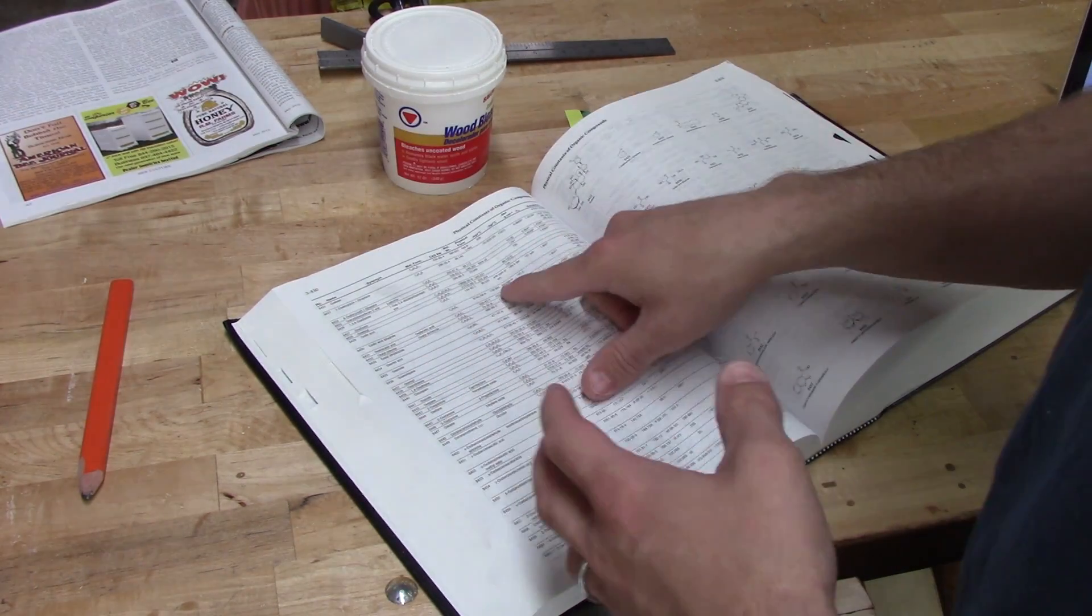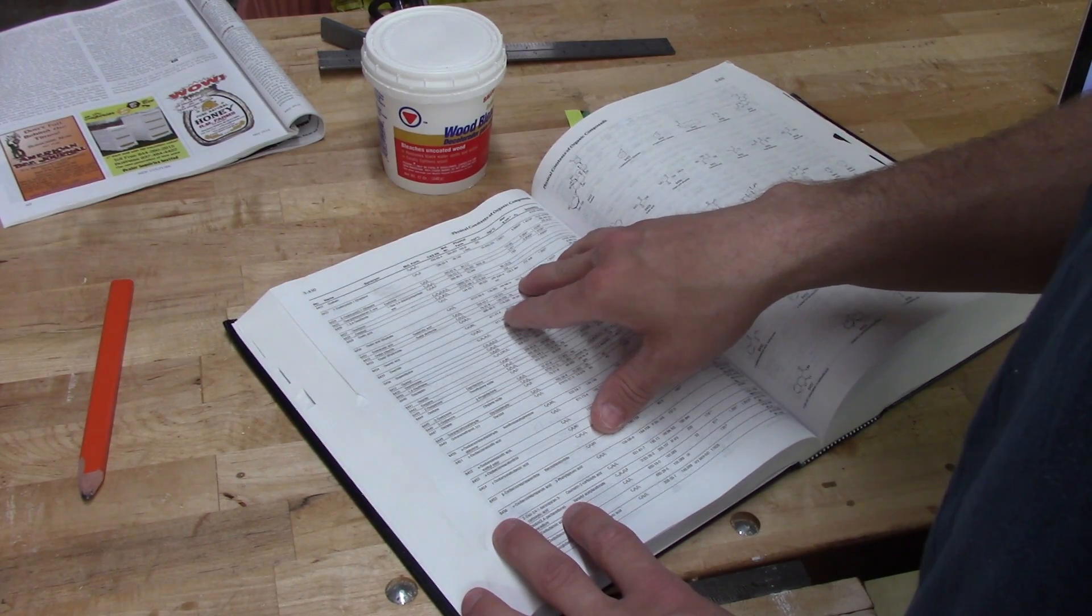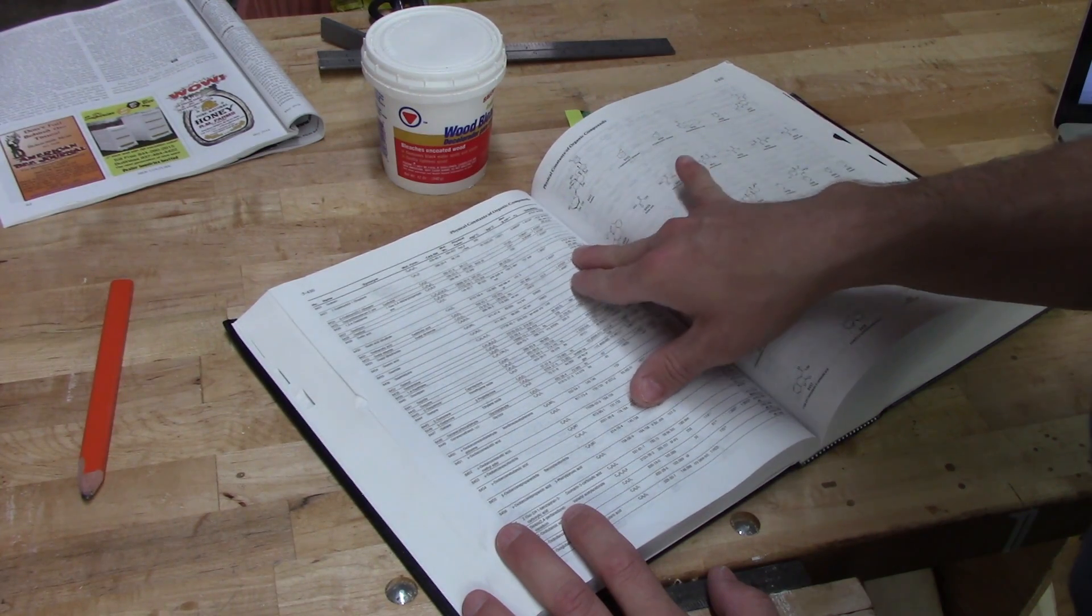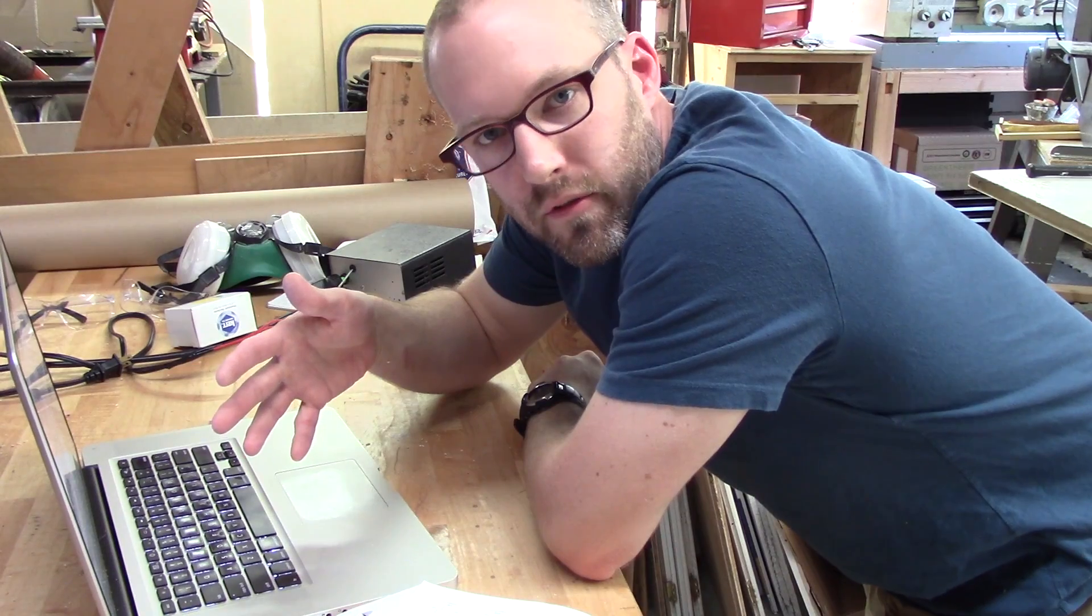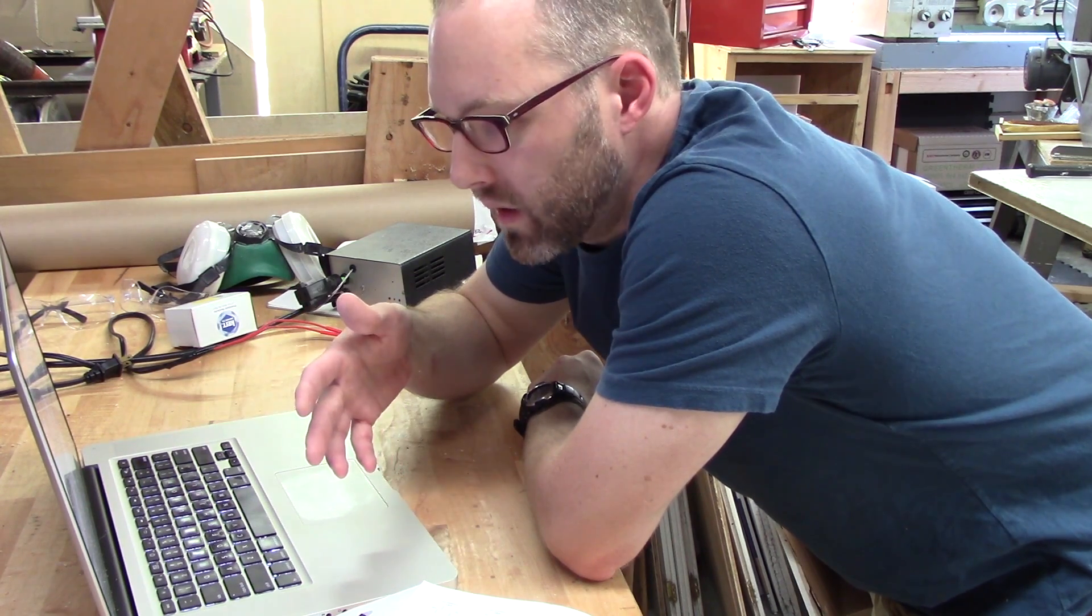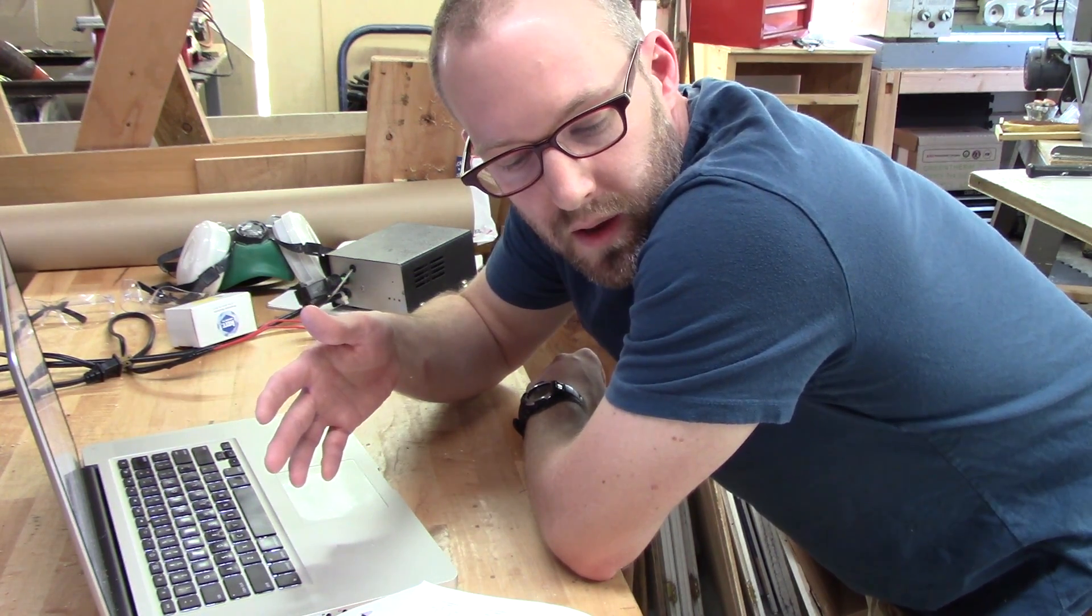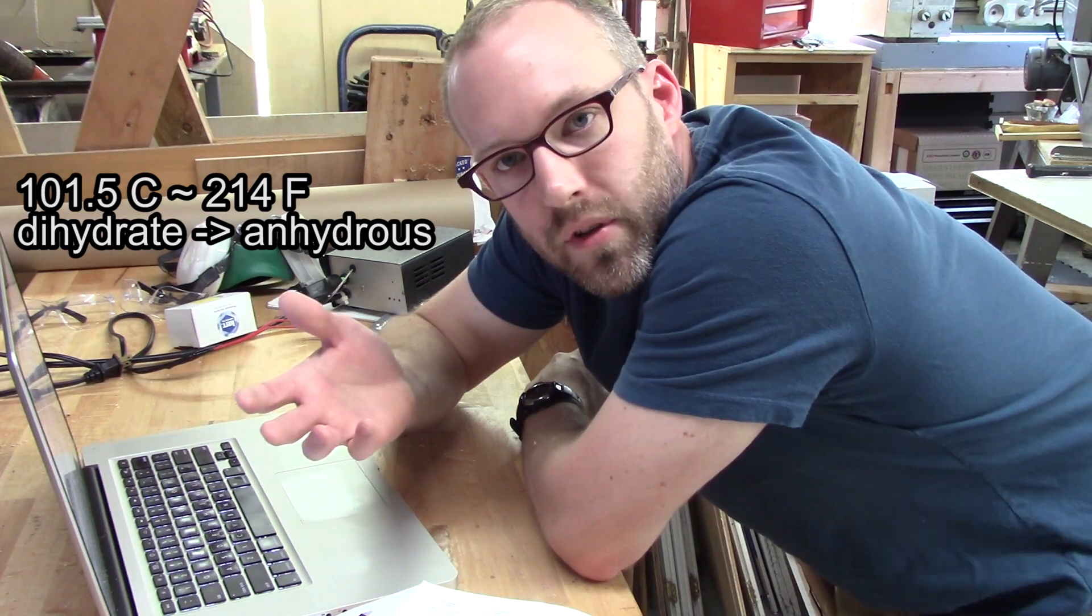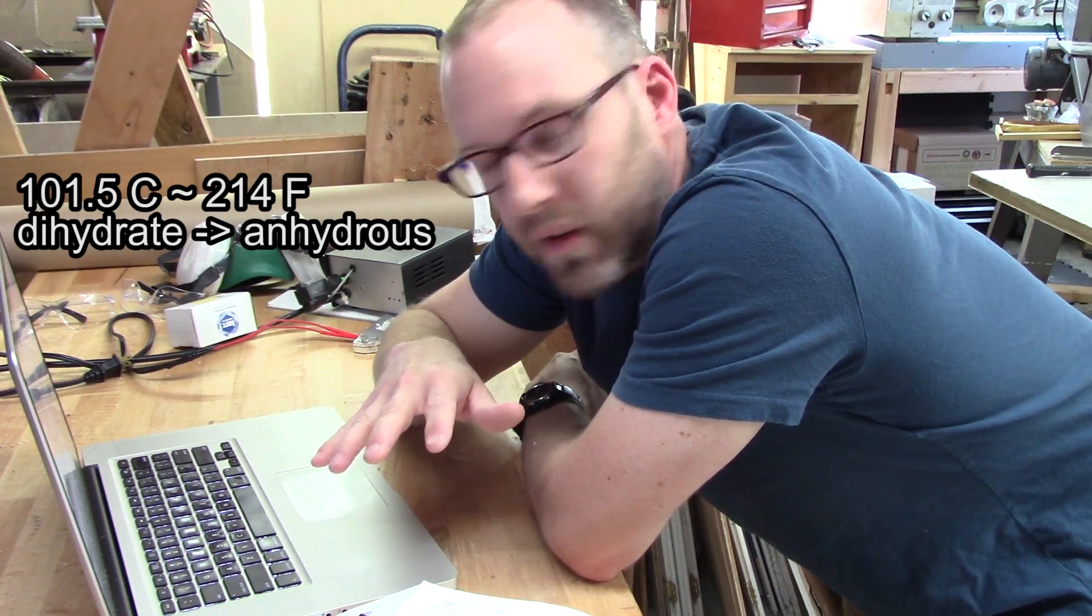So if we start with the dihydrate and we look at the notes, we see here that it has a melting point of 101.5 degrees Celsius. And then we see no boiling point, and there's no notes here. In other literature, we see that there is a decomposition temperature of oxalic acid dihydrate, and this is at 101.5 Celsius or 214 degrees Fahrenheit. It's at this temperature that it loses its water molecules and becomes the anhydrous form.